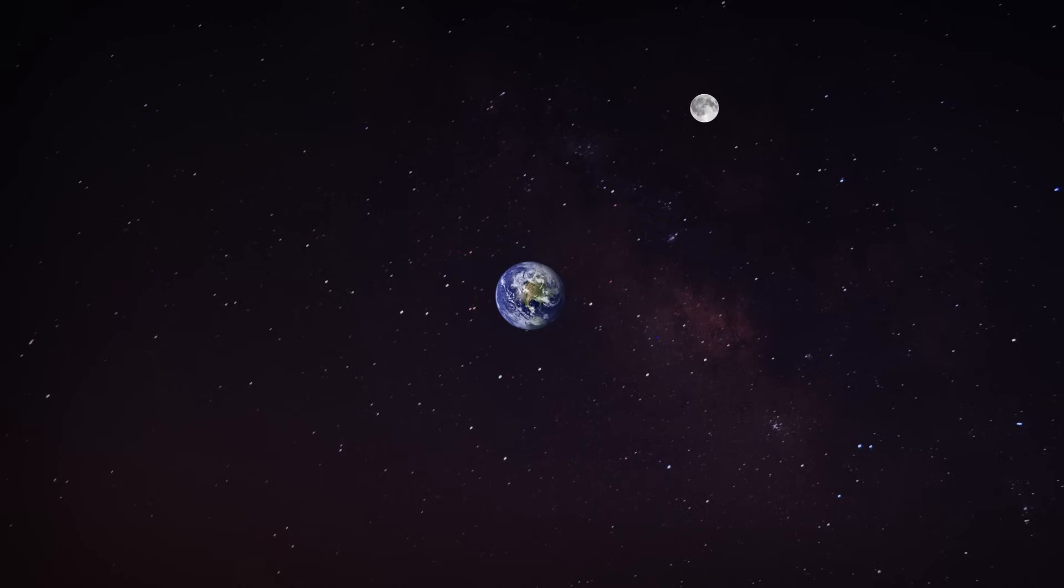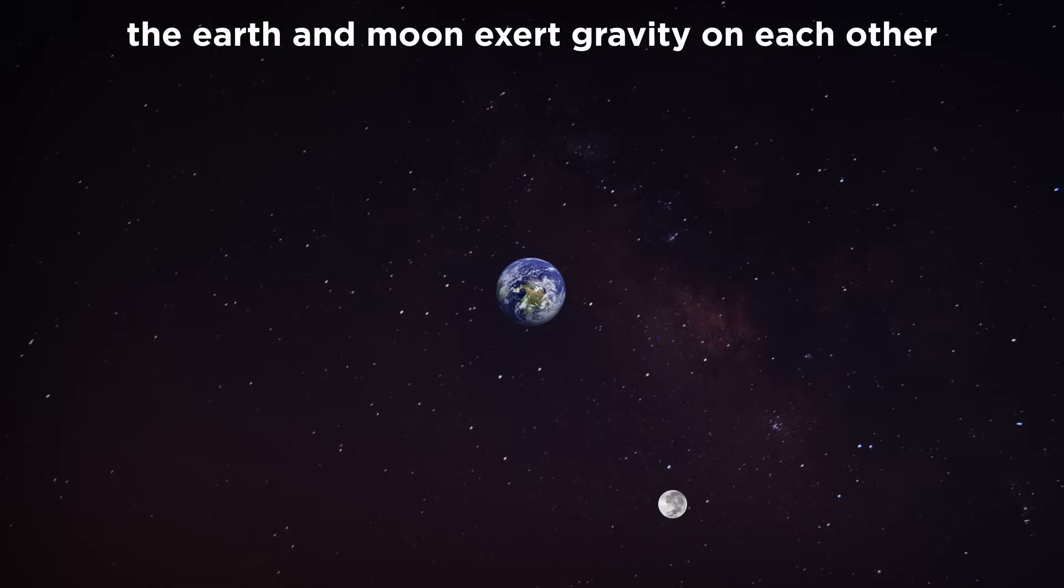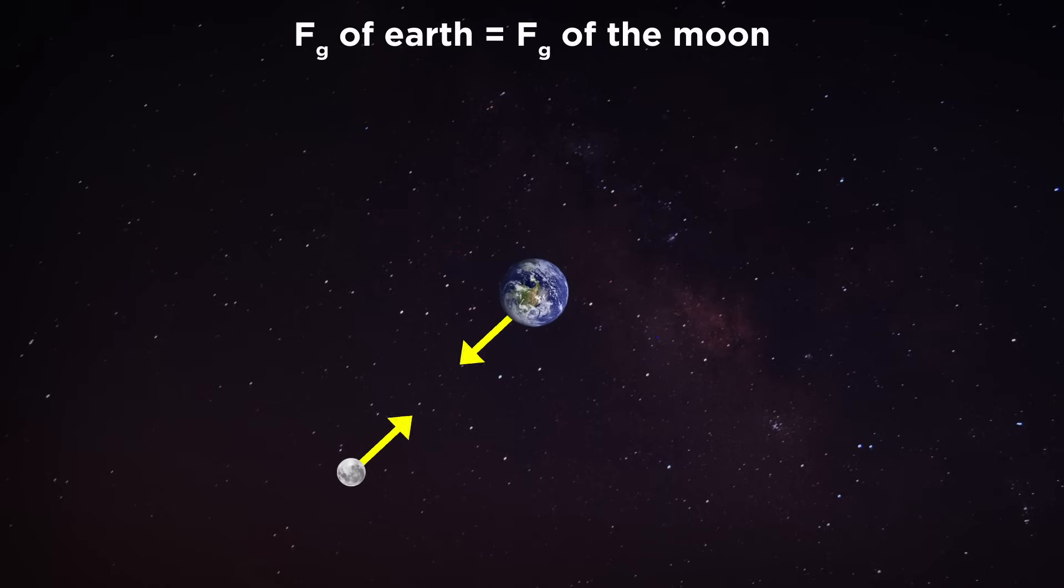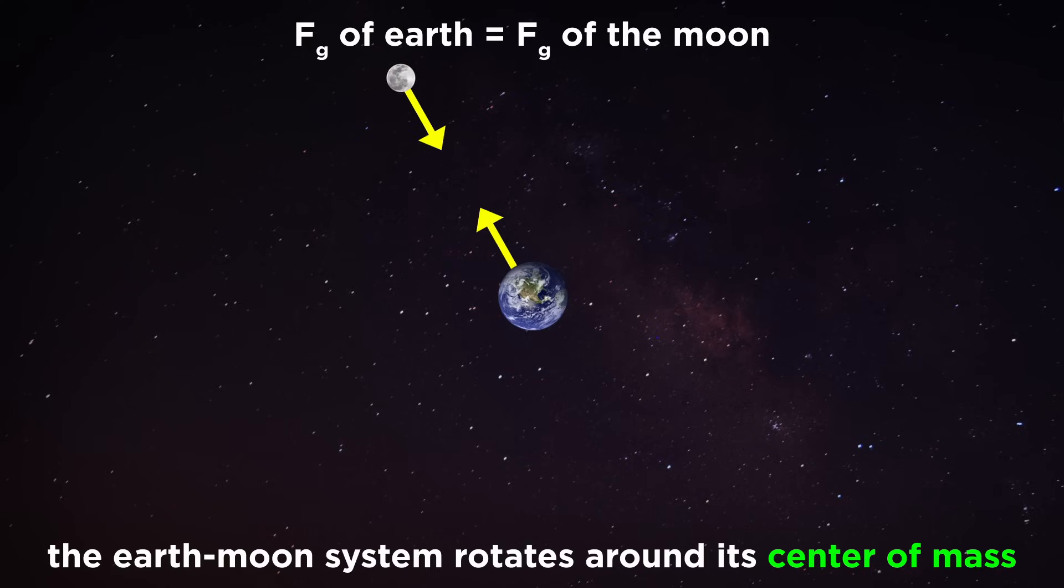When examining a system like the earth and the moon, we must understand that both of these objects exert gravitational force on the other, and that these forces are equal in magnitude, meaning that both of these bodies rotate around their combined center of mass.